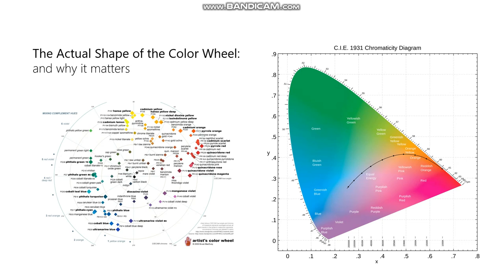One of the flaws with the color wheel is that it assumes equal distance from everything, and it assumes a certain kind of symmetry that is just not there, whereas actually measuring the chart reveals a very different kind of shape.